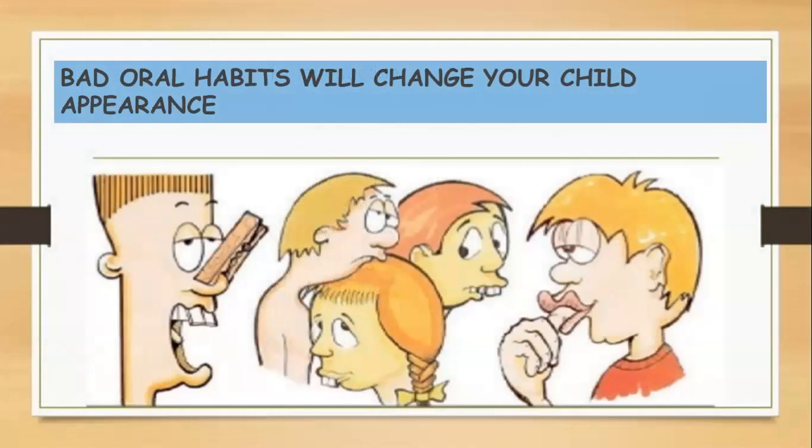Bad oral habits will change your child's appearance. Oral habits may be a part of normal development, or a symptom with a deep-rooted psychological basis that may result in abnormal facial growth. Habits like digit sucking, lip and nail biting, bruxism, mouth breathing, and tongue thrusting may be considered as normal habits seen in children. However, these habits bring about harmful unbalanced pressures upon the alveolar ridges and cause potential changes in position of teeth and occlusion, which may become decidedly abnormal if continued for a longer time period.